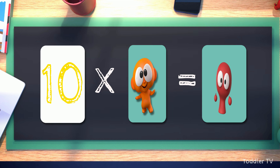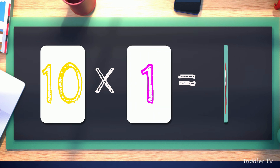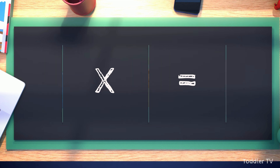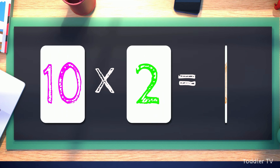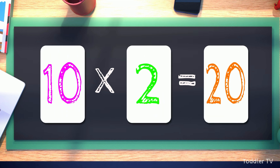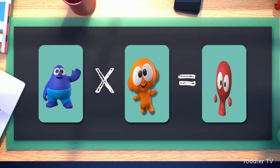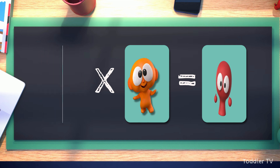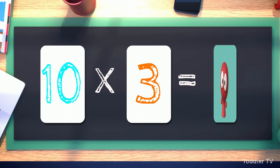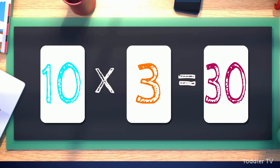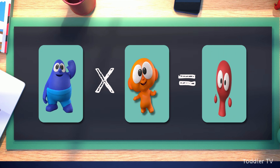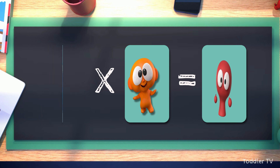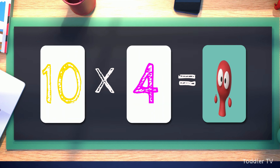Ten times one equals ten. Ten times two equals twenty. Ten times three equals thirty. Ten times four equals forty.